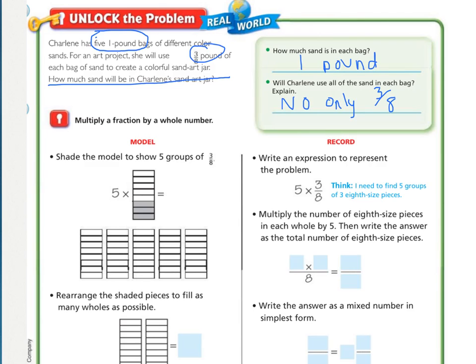You should have underlined how much sand will be in the jar. Circled 3/8 of a pound, and then circled 5 1-pound bags. This is going to be our whole number because 5 times 1 is 5. And how much sand is in each bag? 1 pound.